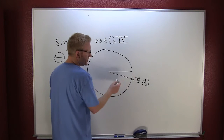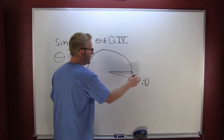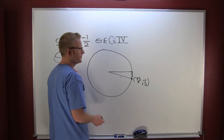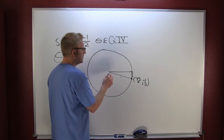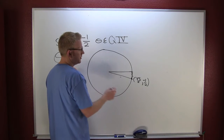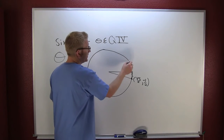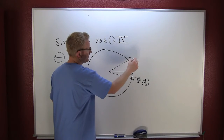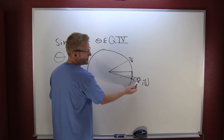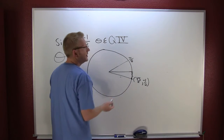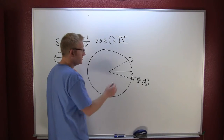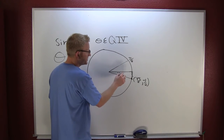Do you remember which radian measure corresponds to such a point? You know this is π/6. And here we're getting the same point with a different sign on our y value, so this is minus π/6.